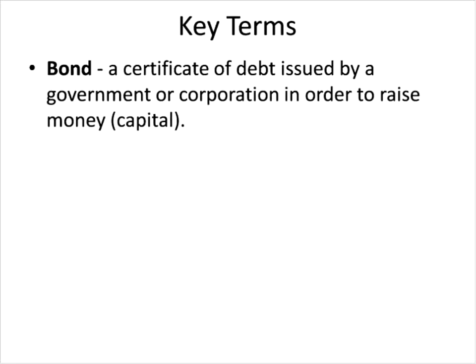A bond is simply a certificate of debt issued by a government or corporation in order to raise money, which we call capital. A corporation basically sells a piece of paper — the bond — and uses the money it raised from that sale to purchase and build things that will help it produce more products in the future.